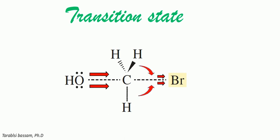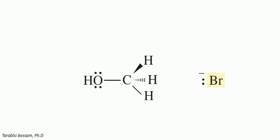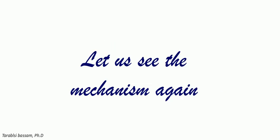The CH bonds continue to move in the same direction. Finally, the bond between the carbon and the nucleophile is fully formed and the bond between the carbon and the bromine is completely broken, and the alcohol is formed. Let's see the mechanism once again.